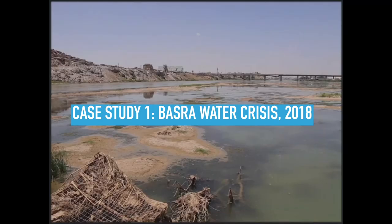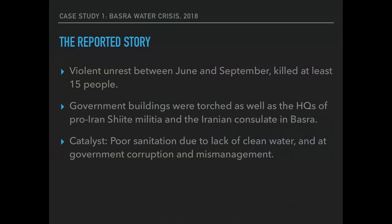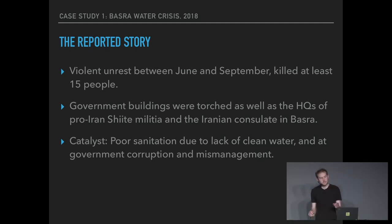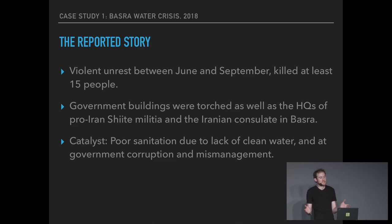Let's go on to some case studies. The first is the water crisis in Basra, Iraq in 2018. The story was that there were a series of violent protests which turned into riots and crackdowns that killed at least 15 people in the Iraqi city of Basra — a predominantly Shia city in the south of the country. During this unrest, government buildings were torched as well as the HQs of pro-Iran Shia militia and the Iranian consulate in Basra. The catalyst for these riots was allegedly poor sanitation due to a lack of clean water and government corruption and mismanagement.